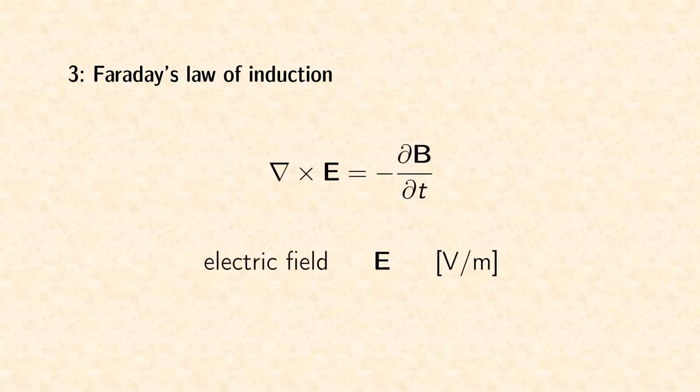The third equation is Faraday's law of induction. It describes how the variation of a magnetic field induces an electric field. Without charges, this variation leads to an electric field in closed loops. Therefore, this equation contains the curl of the electric field in contrast to the divergence in Gauss's law.